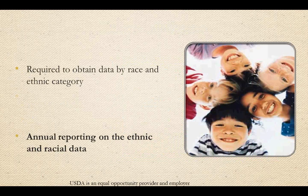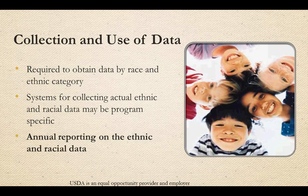Sponsors are required to report race and ethnicity of all program participants annually. The preferred method of data collection according to food and nutrition service is self-identity. For example, a parent checks an ethnicity or race box on their enrollment form. In the case that no self-identification is made, a visual identification should be documented. Please remember you cannot ask a child his or her race or ethnicity. State agencies require annual reporting on ethnic and racial data of participants during the annual application process.